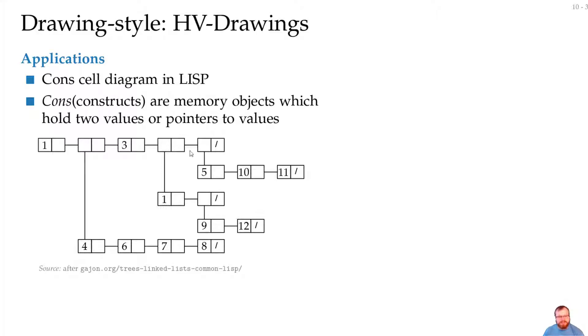This has value and pointer, pointer pointer, pointer and value. So whenever the first one is a pointer, it goes downwards. Whenever the second one is a pointer, it goes rightwards. And that way we get a binary tree that we can visualize like this.